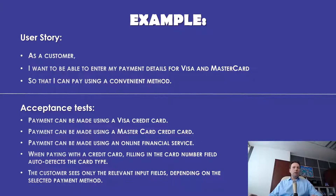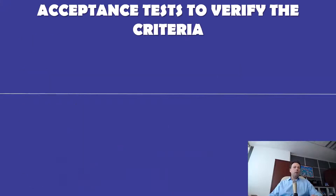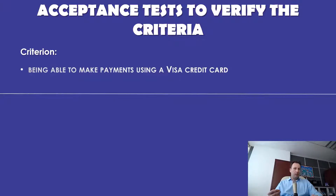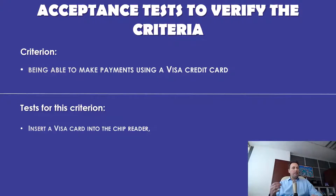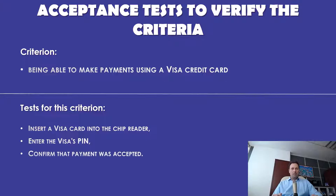We need to create acceptance tests to verify these criteria. Let's take the criterion of being able to make a payment using a Visa credit card and turn it into an acceptance test. We might write a few tests: insert a Visa card into the chip reader, enter the Visa PIN, and confirm that payment was accepted. By going through these steps, you verify the acceptance criterion, and when you meet all the acceptance tests, the acceptance criterion is considered passed.